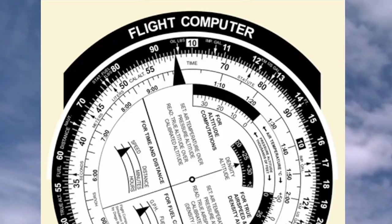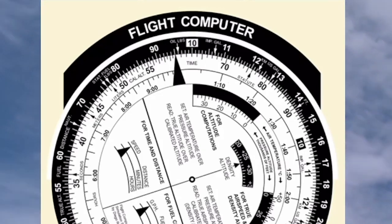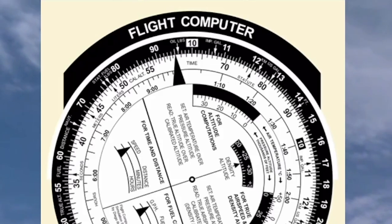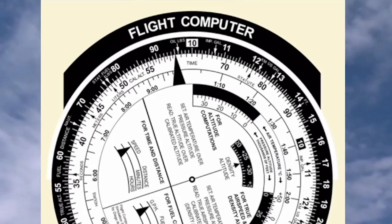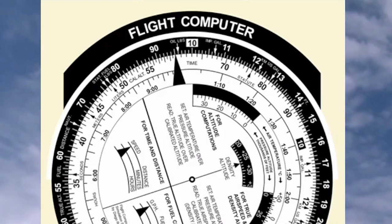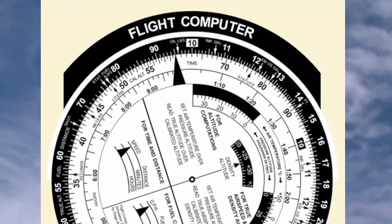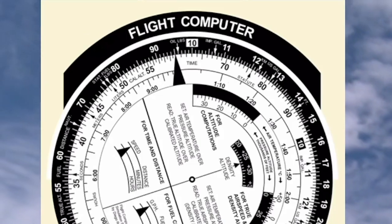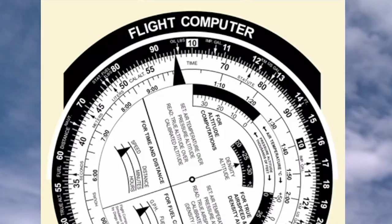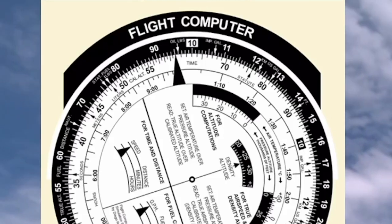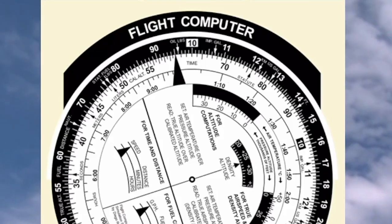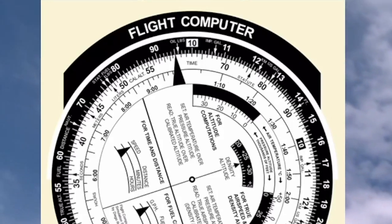How much fuel will I burn in an hour and a half? If you go out to about the 2 o'clock position, you'll see 90, and directly under that you'll see 1 hour and 30 minutes. If you follow that mark from 1 hour and 30 minutes up, you will see that I'm going to burn just over 14 and a quarter gallons of fuel.